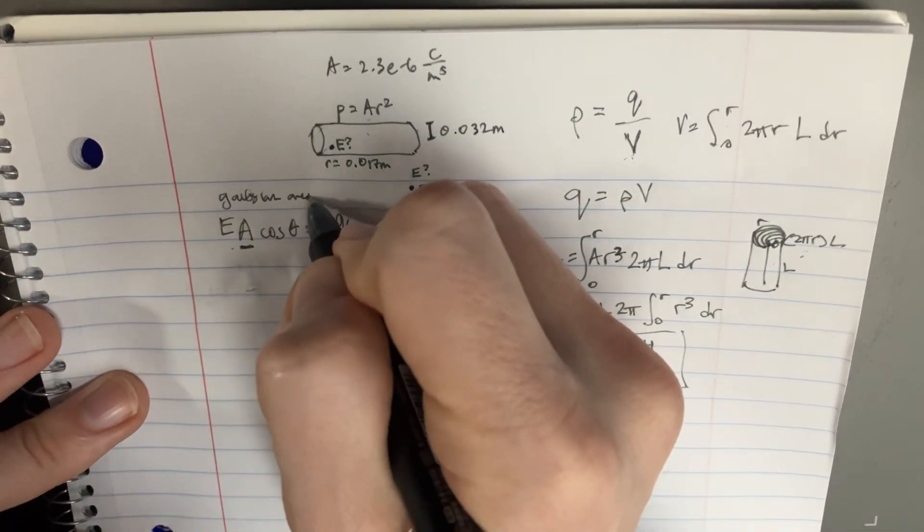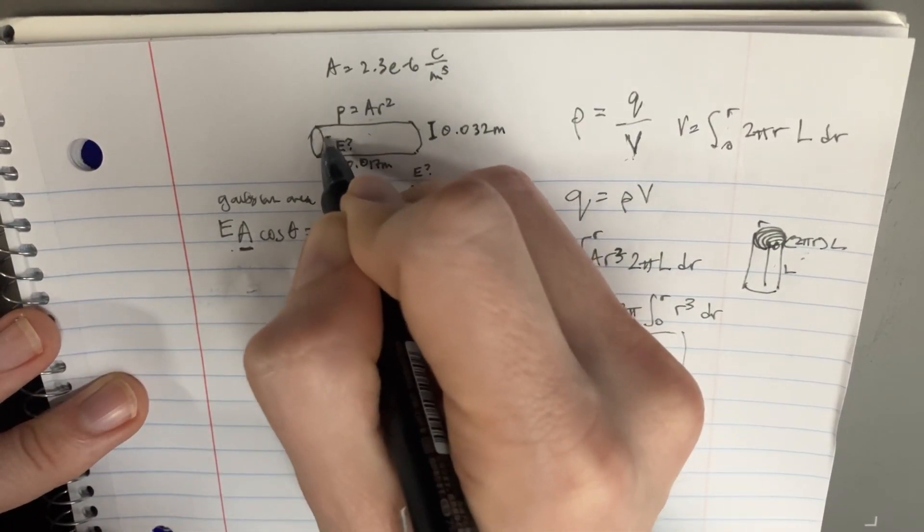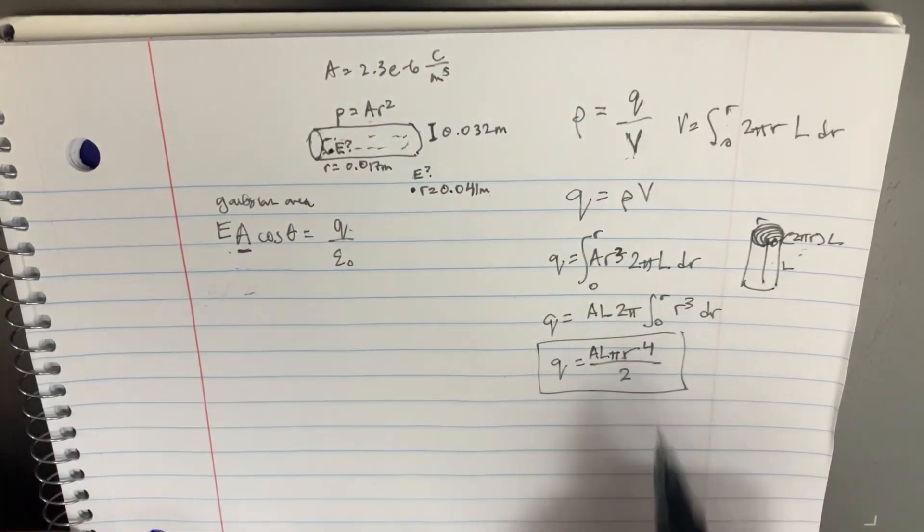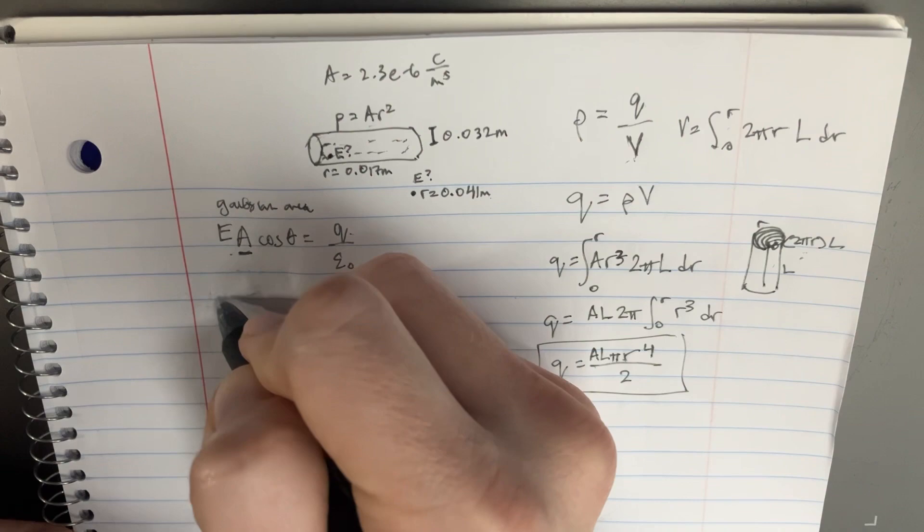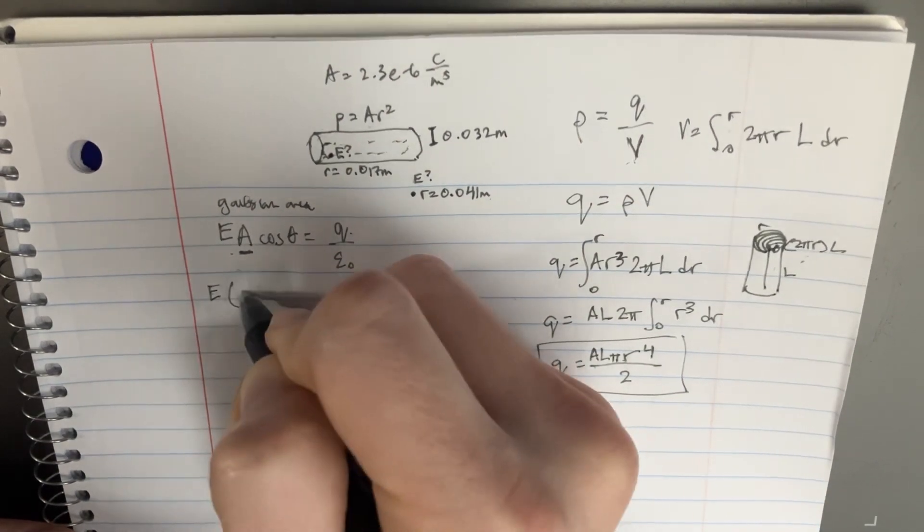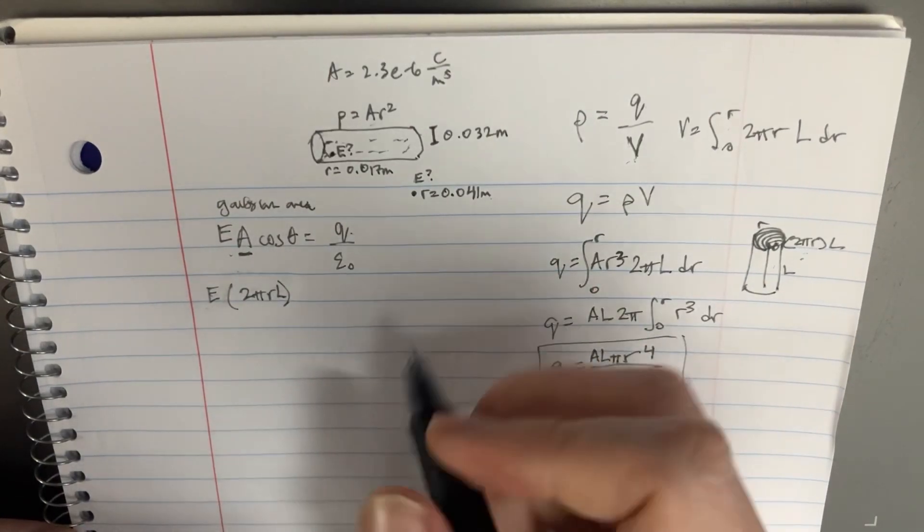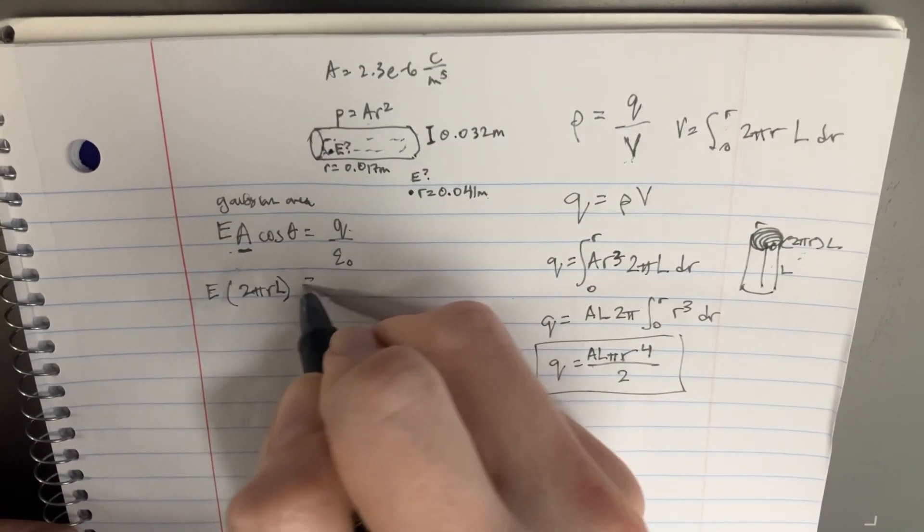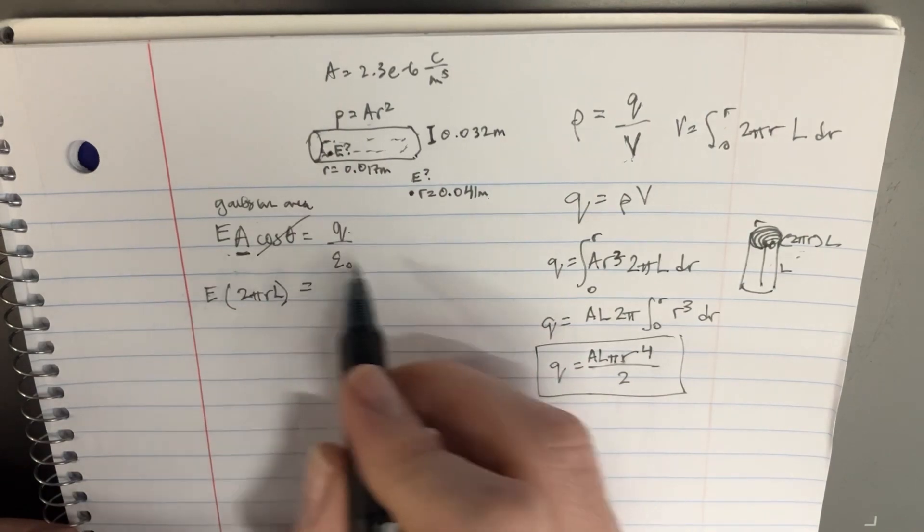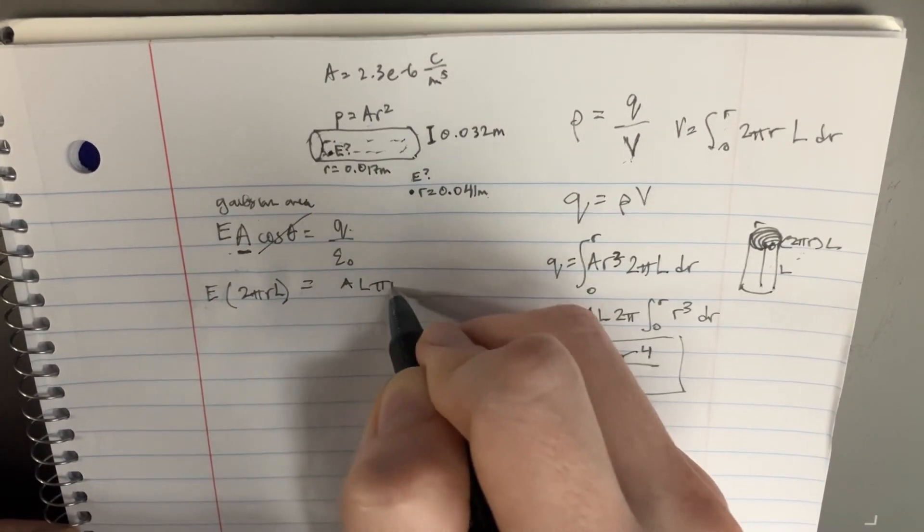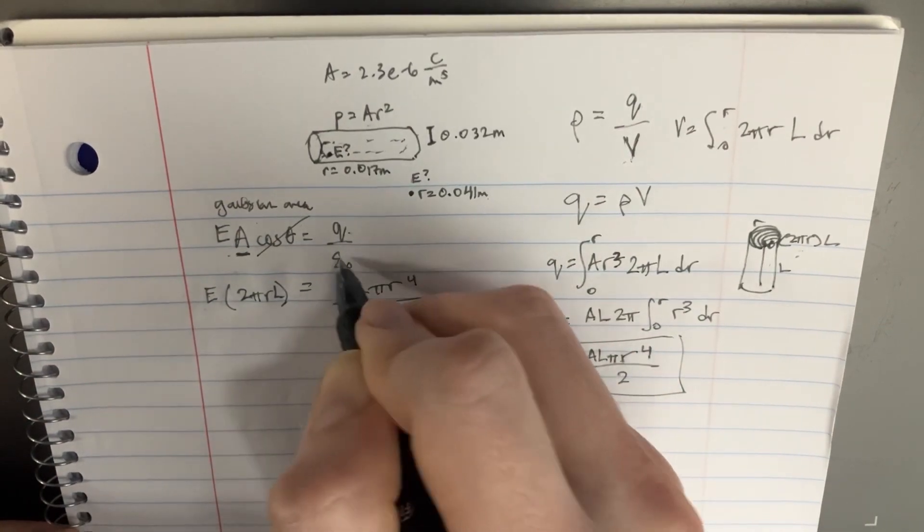What's the Gaussian area? At this point, it's going to be the imaginary area right in here. And that's going to be the same R we're using here. So we can just basically say that it's E times 2πrL. The area is, don't forget the L. So, and then we have equals, the epsilon goes away, A, L, π, r to the fourth, divided by 2 epsilon naught.